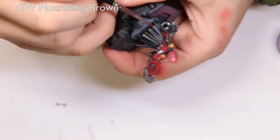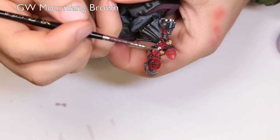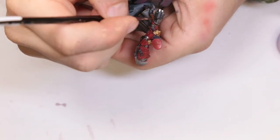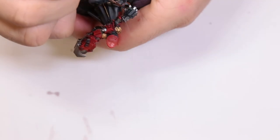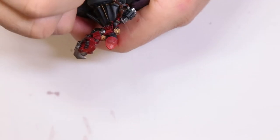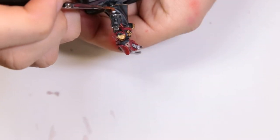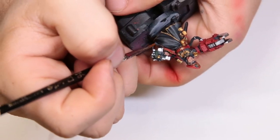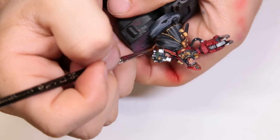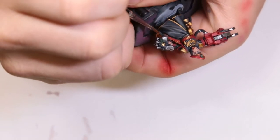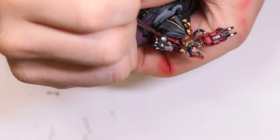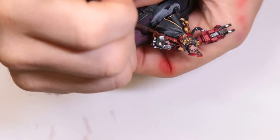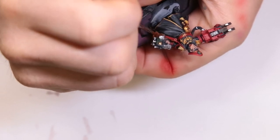Next on the Mornfang Brown. The only thing we got brown on this model is the leather strap for his bolter. Just paint that in with the Mornfang Brown. We'll highlight it up here in a second.